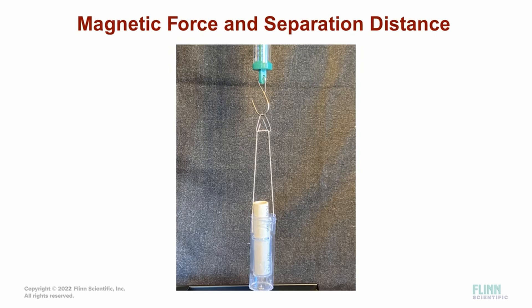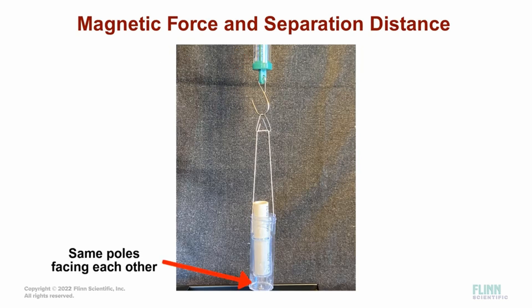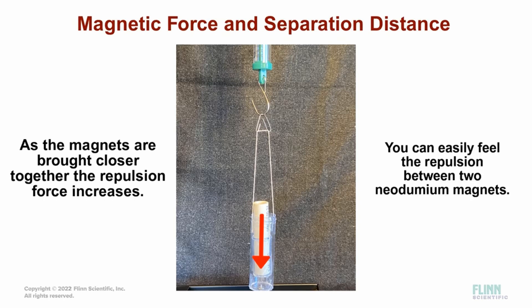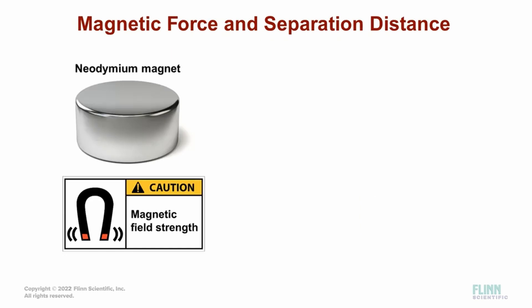This is the apparatus we are going to be using in this lab. The force scale will help us apply a specific amount of force to the magnets. When the same poles of two magnets are brought together — two north ends, for instance — they will repel each other. The closer you bring them together, the stronger that repulsive force will become. This is something you can feel easily. The magnets being used in this lab are neodymium, which are extremely strong.